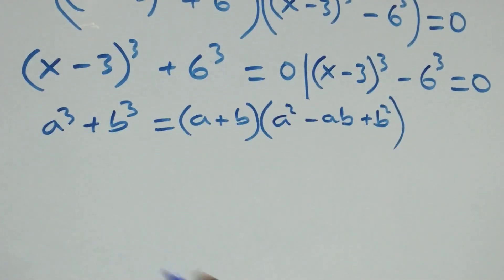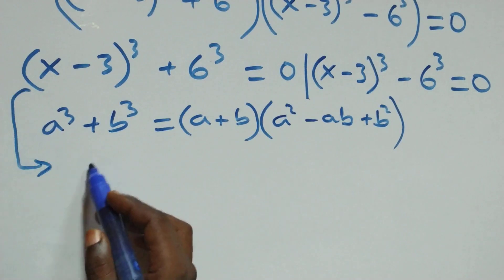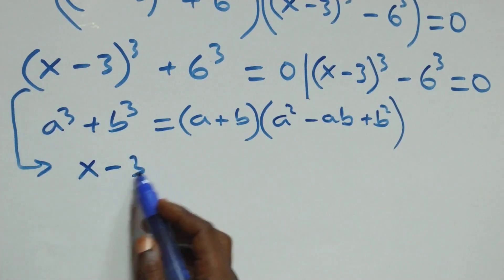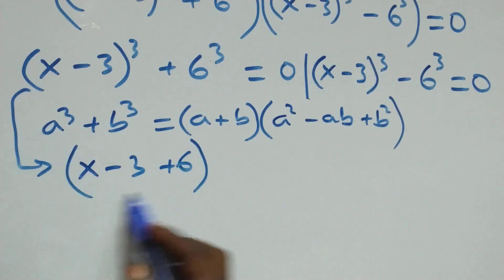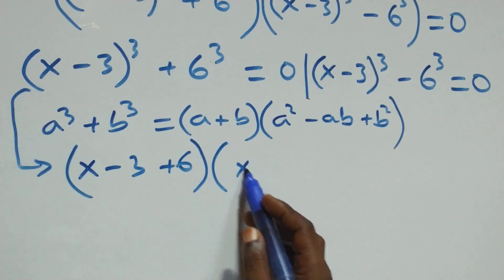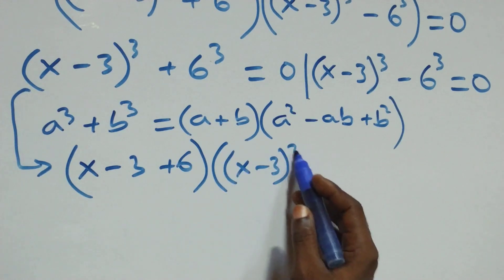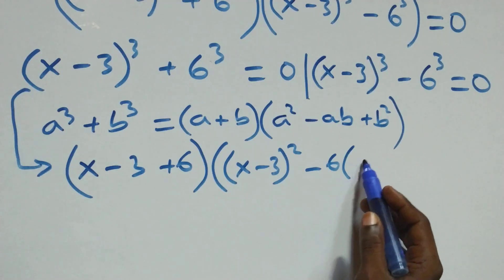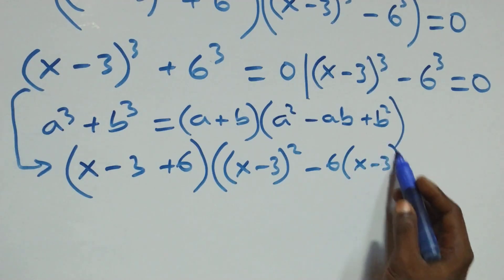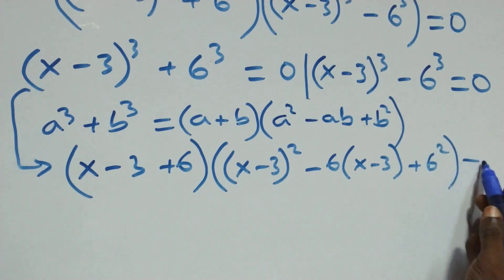That is, what we have becomes: (x minus 3 plus 6), in the form of (a plus b), times (x minus 3) squared minus 6 times (x minus 3) plus 6 squared, close bracket, equals to 0.